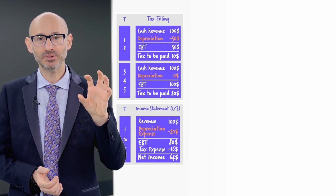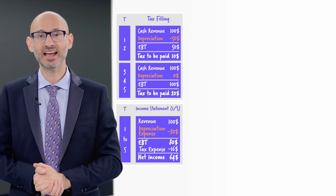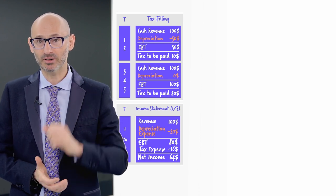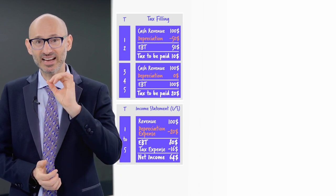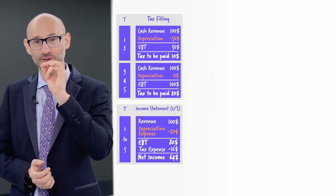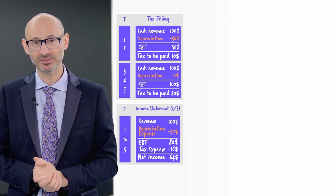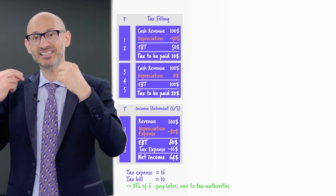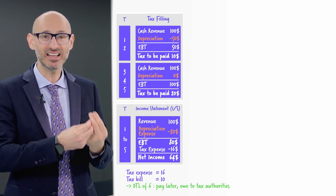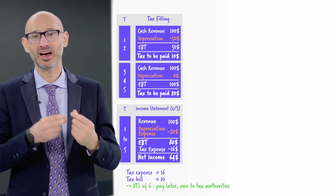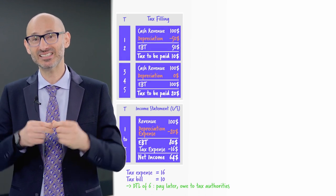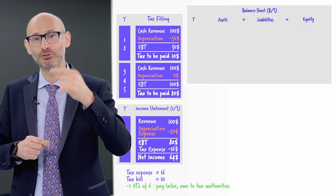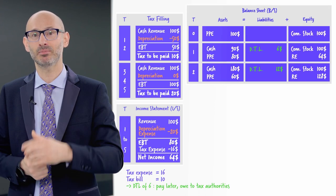At 20%, the tax expense is 16. Now remember, on the tax bill, we had to pay 10 the first two years. So, if the expense is 16 and the tax bill is 10, we are paying less by six and registering a deferred tax liability.